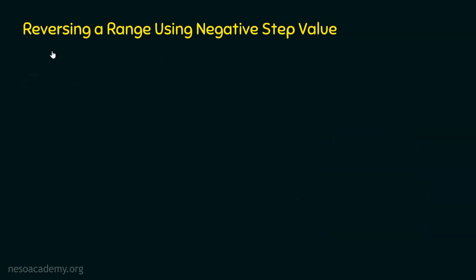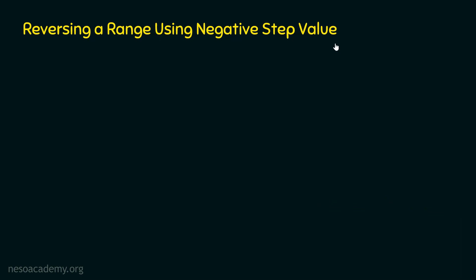Let's learn how to reverse a range of numbers using negative step value with the help of a for loop. We know that if we use the range function along with a for loop, we can print a range of numbers on the screen. But this time we want a reversed sequence, not the normal sequence. Let's consider one simple example.